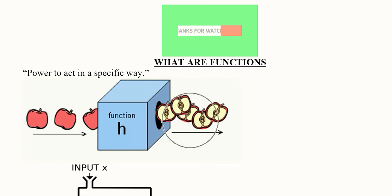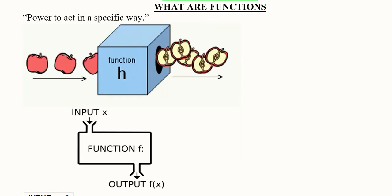You can see these slices are dependent on the apples that we introduce. This is a dependent variable and this will be the independent variable. We can also look at it this way: if we introduce an input x into function f, it will give us an output which will be termed as f(x).